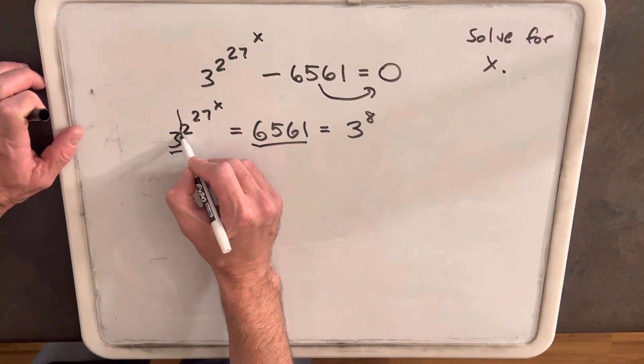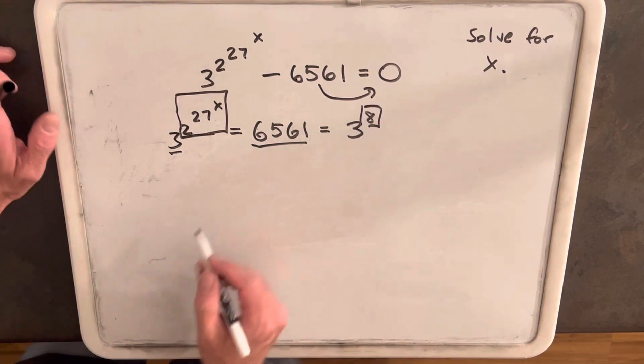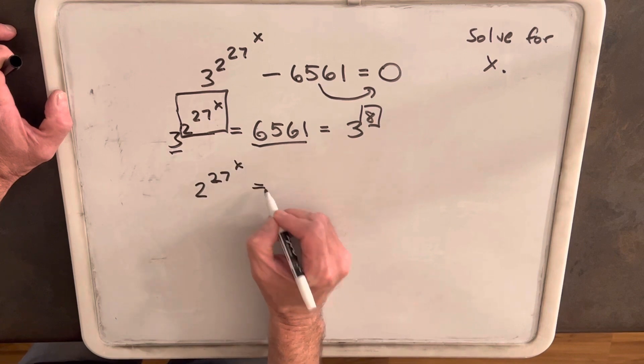So we're saying then the exponent on the left is just this part. And we're just going to equate those and say 2 to the 27 to the x equals 8.